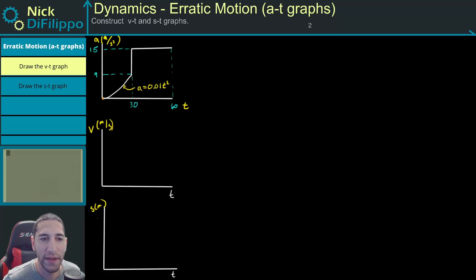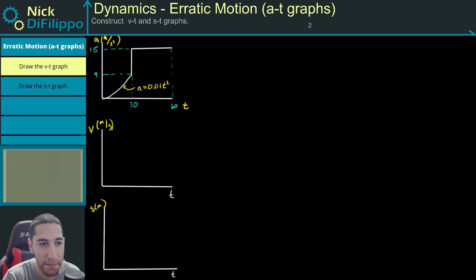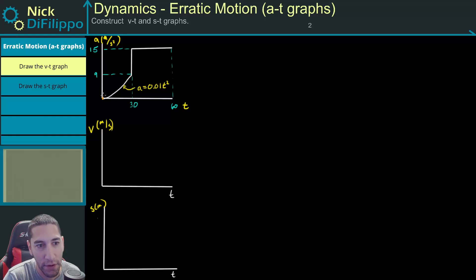In this problem, we are given the acceleration versus time graph, and we are asked to figure out what the velocity versus time graph is and what our position versus time graph is. For this acceleration graph, we have two different curves, so we have some form of erratic motion.